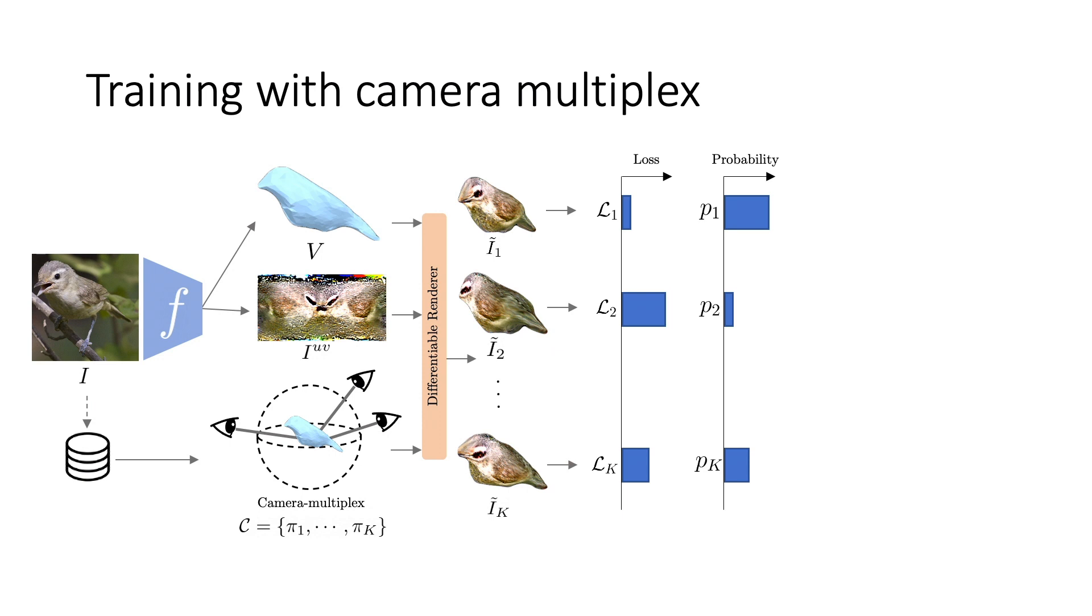Intuitively, a camera with a smaller loss is more probable and vice versa. The shape and texture predictor F is then updated against the expected loss over all cameras, coupled with some regularization.